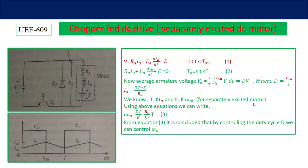For a separately excited motor, torque T = K×IA and back EMF E = K×ωM. Substituting these into the armature current equation gives: ωM = DV/K − (RA/K²)×T. By varying the duty cycle D we can control the speed of the motor, keeping other parameters V, K, RA, and T constant. Torque-speed characteristics based on the duty cycle can also be derived.